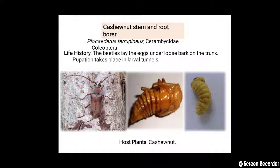The next pest is the cashew nut stem and root borer, Plocaederus ferrugineus, belonging to family Cerambycidae and order Coleoptera. Regarding life history, the beetles lay eggs under the loose bark on the trunk, and pupation takes place in the larval tunnels.